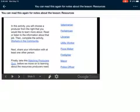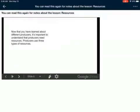Then there is another quiz there. Take this matching producers quiz. And that's another really fun part. Now that you have learned about different producers, it's important to understand that producers need resources. Producers use three types of resources. Capital resources. Human resources. Natural resources.